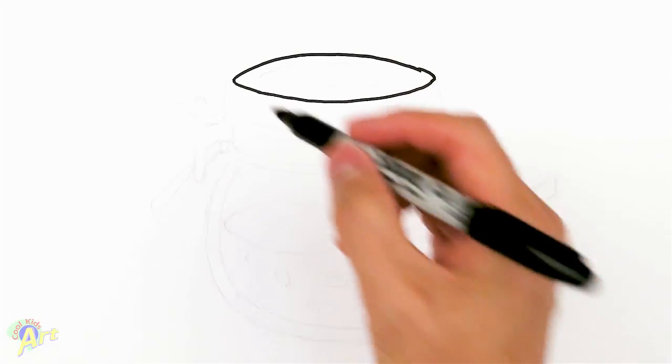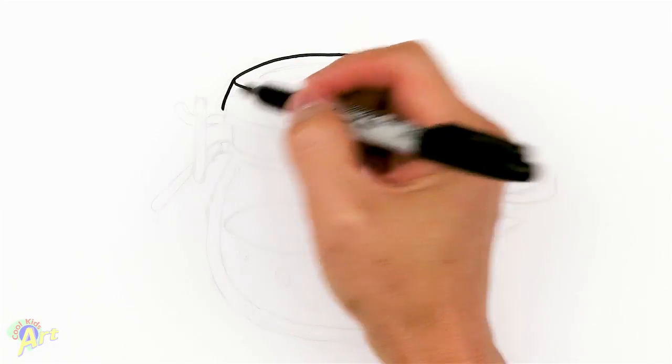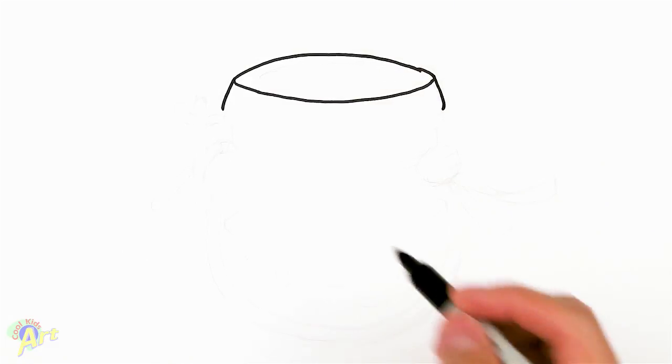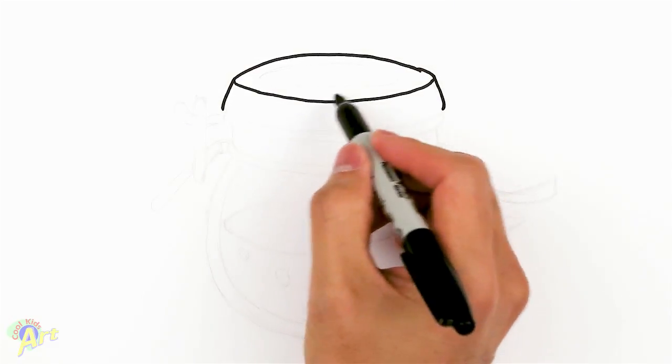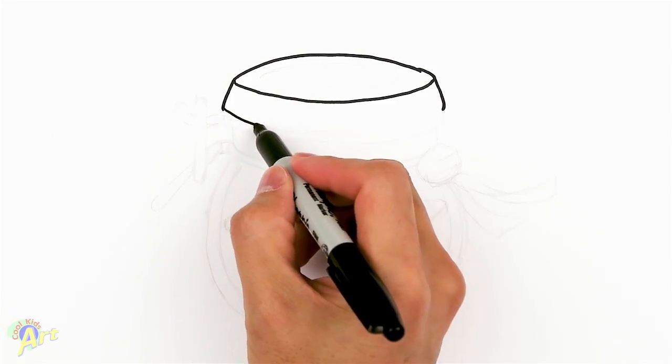Alright, so once you have the top, then you're just going to flare it out a little bit on the side, and then we're going to draw the bottom of the lid, so it's the same curve as that, just wider.